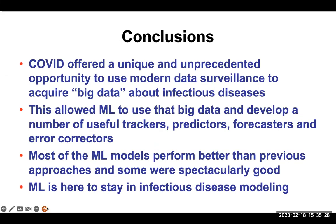COVID has offered a unique and unprecedented opportunity to use modern data surveillance to acquire big data about infectious diseases. Getting that big data has allowed us to use machine learning to track infectious diseases, predict and forecast them, and correct for errors in reporting. Machine learning models generally perform better than most if not all previous approaches, and some were spectacularly good. Machine learning is here to stay in terms of understanding and managing infectious diseases, predicting their outcomes, and advising on optimal public health measures. This has changed our perspective on disease modeling.